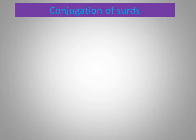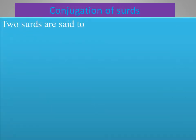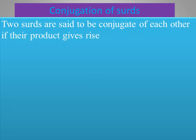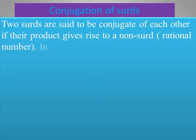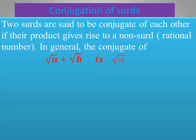Let's look at the rules for conjugation of surds. Two surds are said to be conjugate of each other if their product gives rise to a non-surd, that is, a rational number. In general, the conjugate of √a + √b is √a − √b.